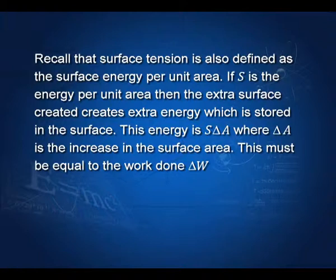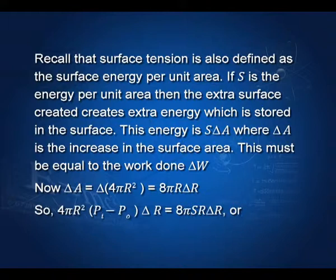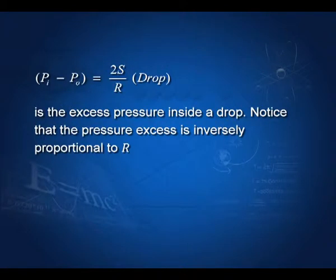If s is energy per unit area, then the extra surface created stores extra energy. The extra energy required is s times δA, where δA is the extra surface created. The total surface area is 4πr², so δA = 8πr δr. Setting the work done equal to the energy stored: 4πr² (P_i − P_o) δr = s × 8πr δr. From this equation, we get the pressure difference P_i − P_o = 2s/r.